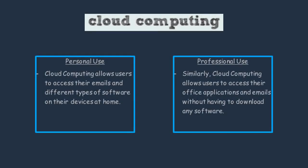The next online system we're going to talk about is cloud computing. Individually, people might use cloud computing to access their emails and different types of software through different devices. People can use cloud computing professionally in pretty much the same way — they can access their emails and any software used in the office from their devices at home and wouldn't have to download any software. An example of this could be when students access their emails from home, especially during lockdown, when students had to access school documents through software online such as Microsoft Teams and Zoom.